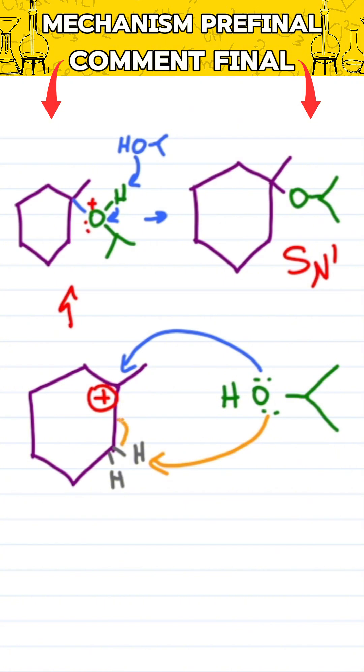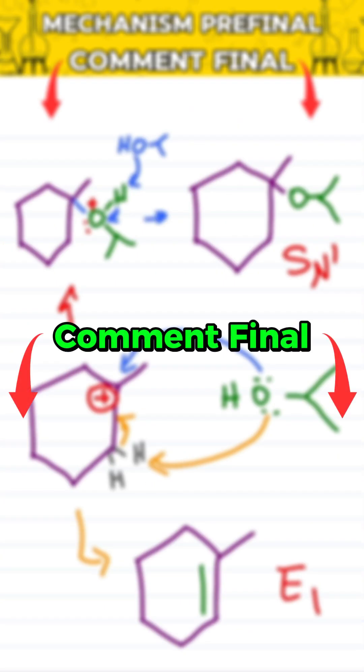Option two, I can grab a beta hydrogen for an E1 reaction. Comment final below for even more practice before your final exam.